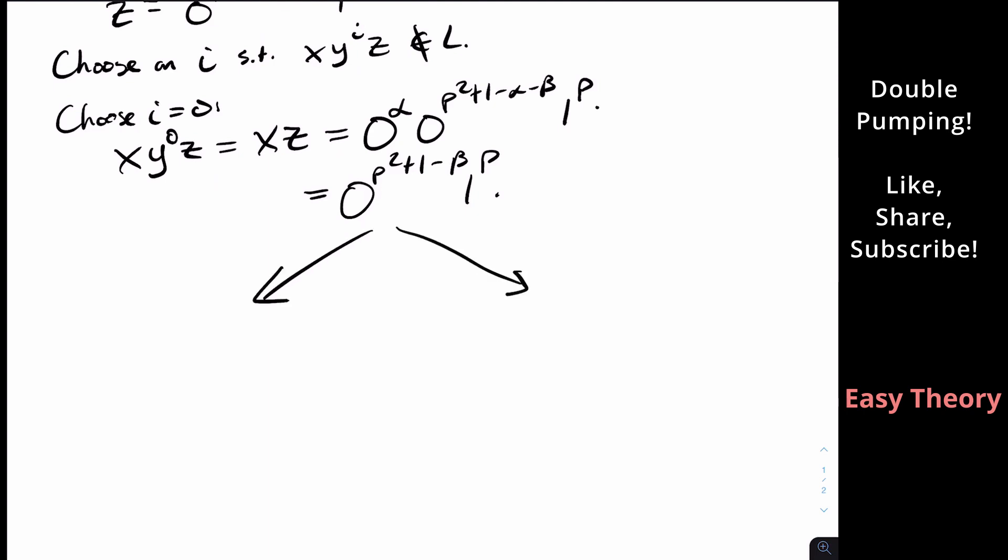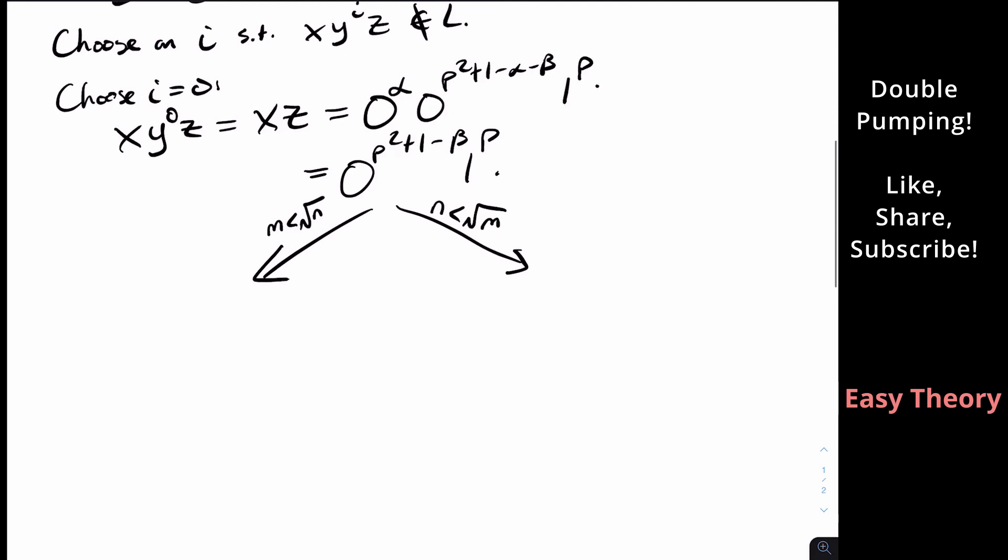So I'm going to subdivide this into two conditions. And the one on the left, I'm going to call the m less than the square root of n branch, and the other one I'm going to call the n less than the square root of m branch. So what does that mean? Well,